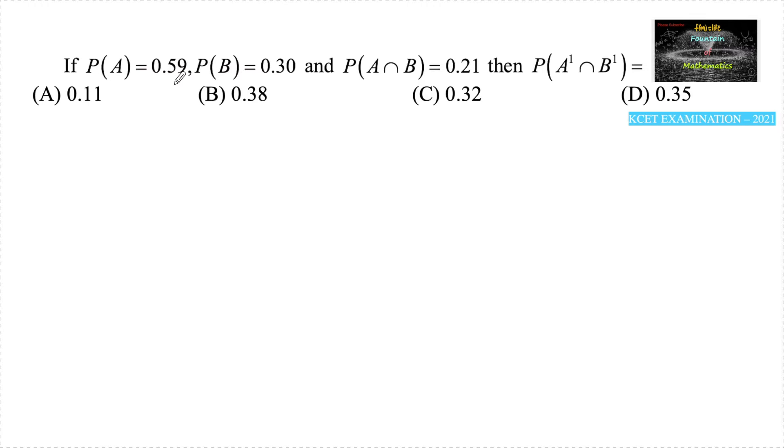If P(A) = 0.59, that's probability of event A is 0.59, and probability of event B is 0.30, and probability of A intersection B is 0.21, then probability of A complement intersection B complement is: